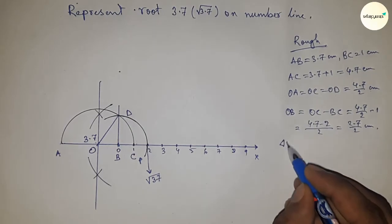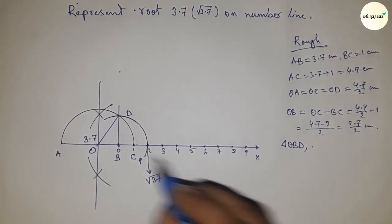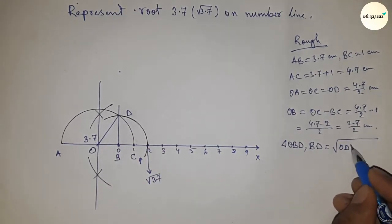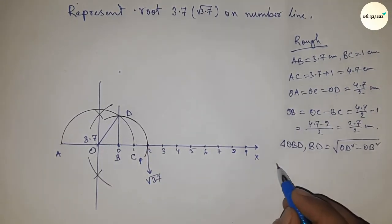Now right angle triangle OBD, so we can write BD equal to, by Pythagoras theorem, OD square minus OB square.